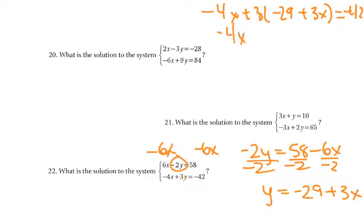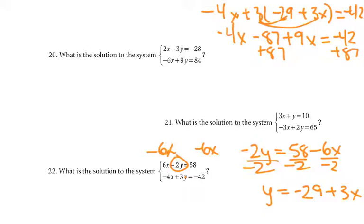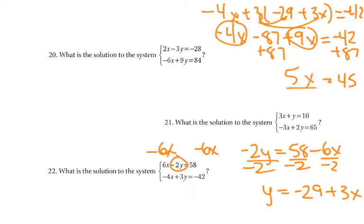Now we simplify. 3 times negative 29 would be negative 87, plus 9x because 3 times 3x is 9x. Add 87 to both sides: 87 plus negative 42 gives us positive 45. Negative 4x plus 9x would give us positive 5x. Divide by 5, and x would equal 9 — which is what we already found out. Then we'd pick an equation, put 9 in for x, and solve.